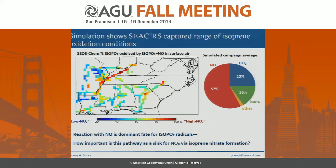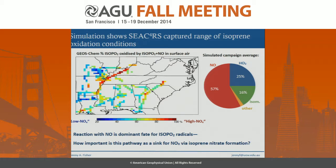We can use the model to understand the conditions sampled during the SEAC4RS campaign. These high-resolution model results, sampled over the SEAC4RS flight tracks, show the percent of isoprene peroxy radicals reacting with NO versus any other fate. Areas shown in blue, like the Ozarks, are low-NOx regions where most radicals react with HO2 or via isomerization. Areas in red are high-NOx where most reaction is with NO. The pie chart on the right shows the simulated campaign average: the dominant fate for these radicals is reaction with NO, as expected for the southeast U.S.